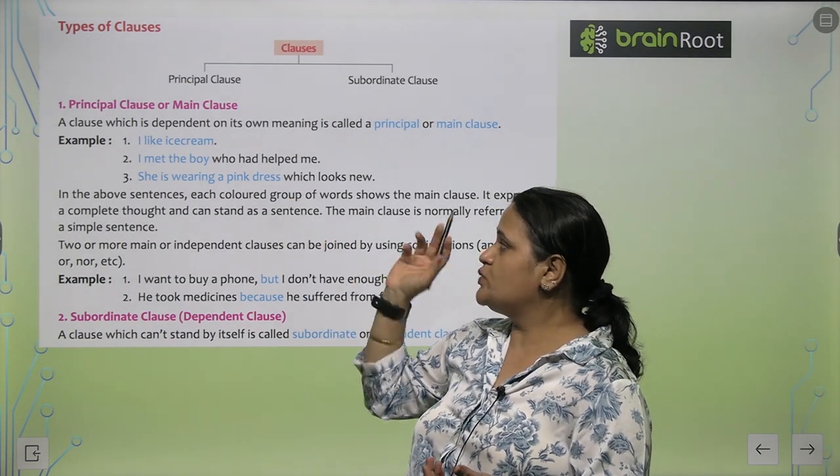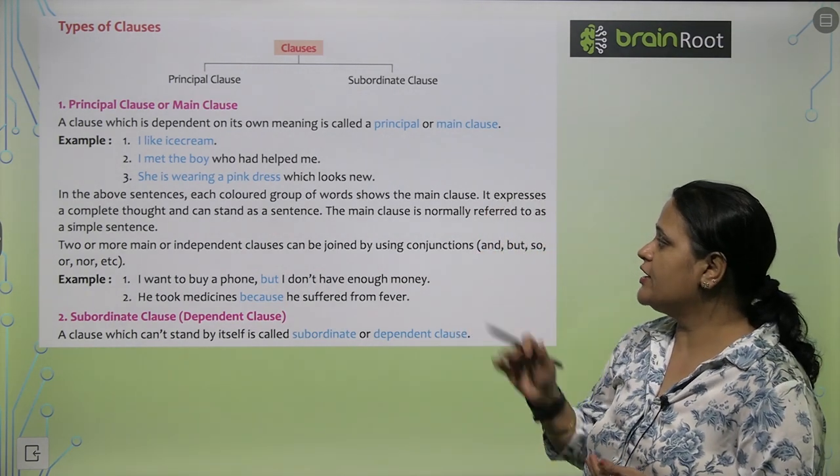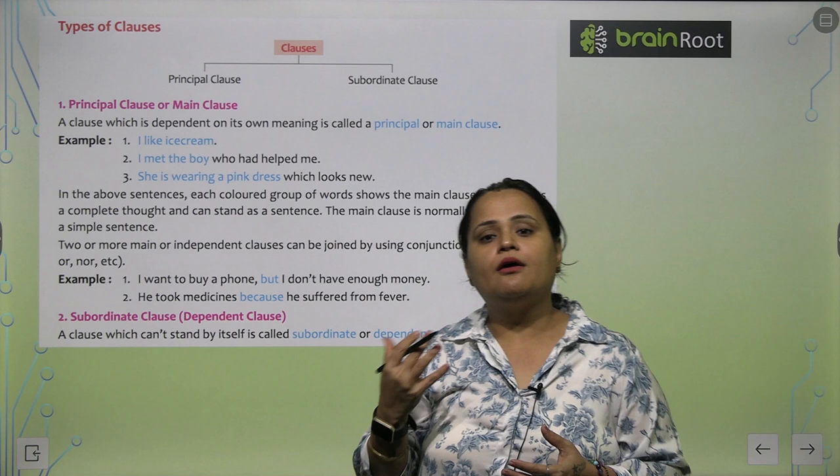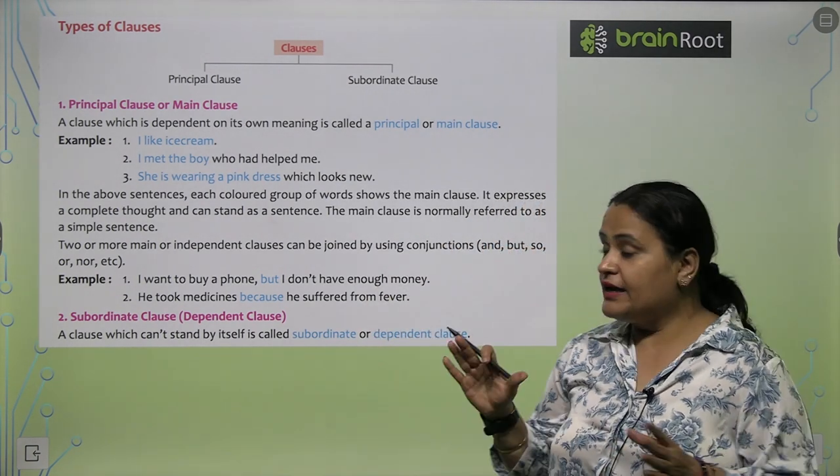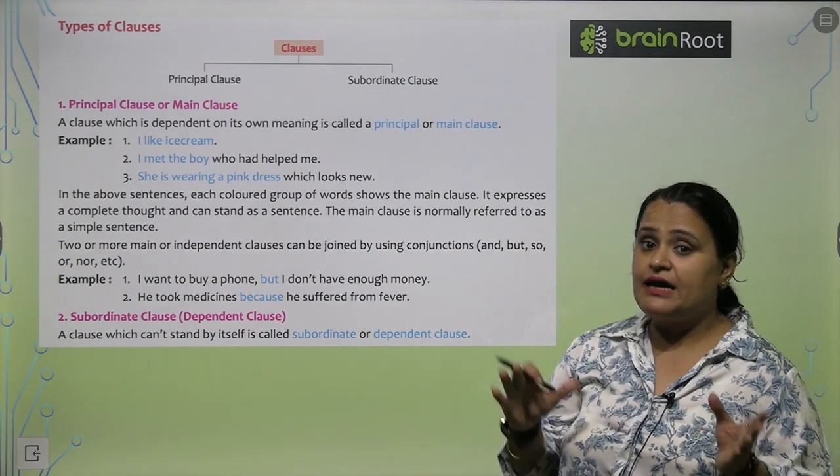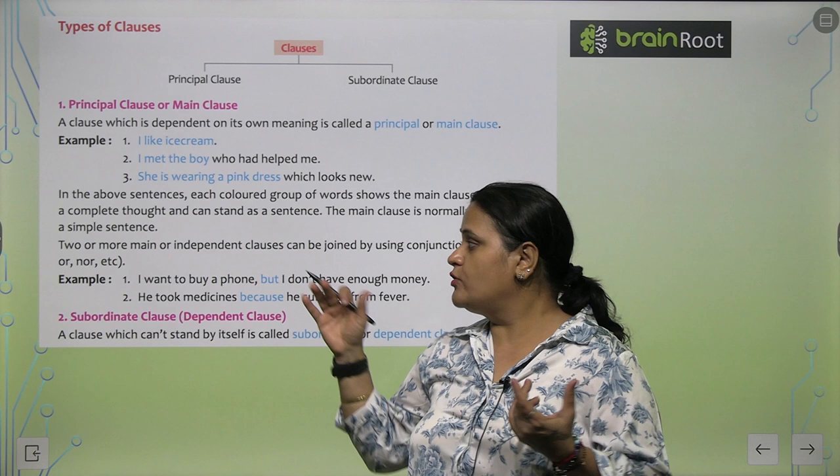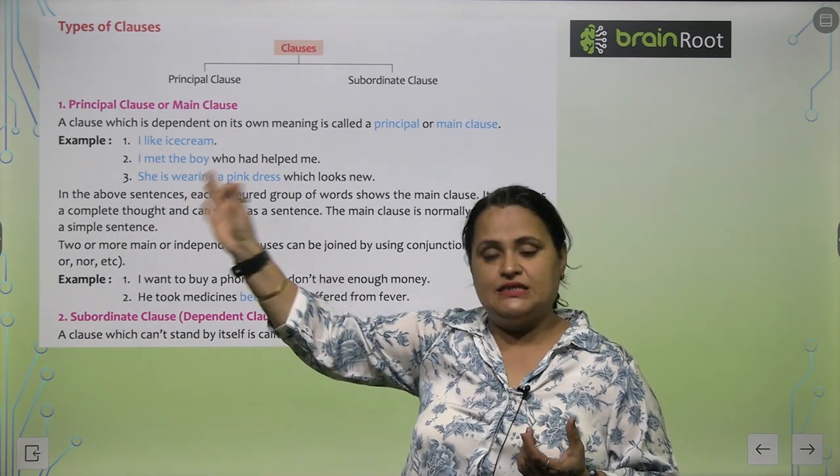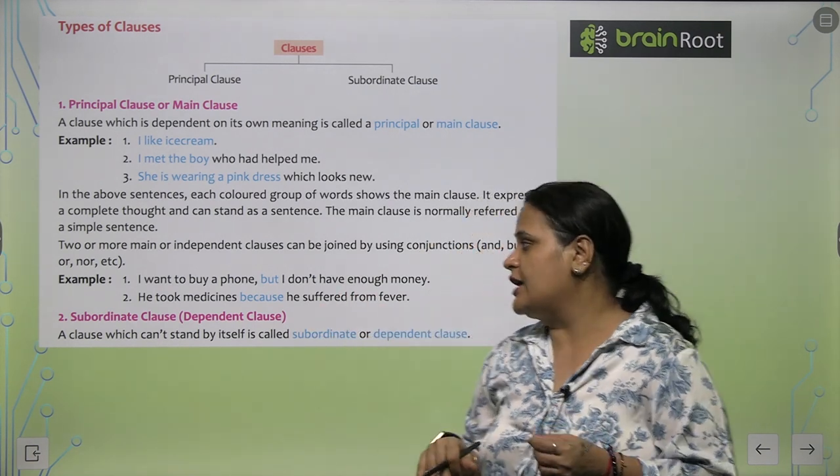In the above sentences, each colored group of words show the main clause. It expresses a complete thought and can stand independently as a sentence. The main clause is normally referred to as a simple sentence. Main clause kaise dikhta hai? Simple sentence ki tarah dikhta hai.